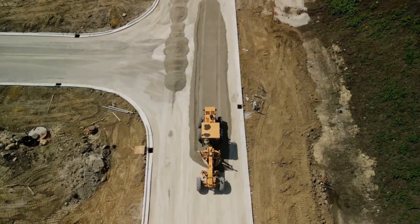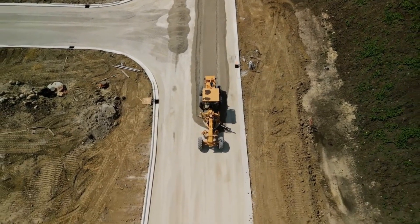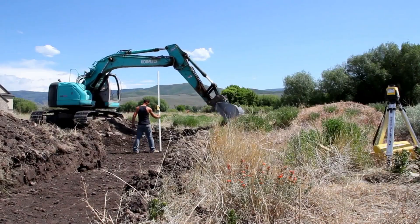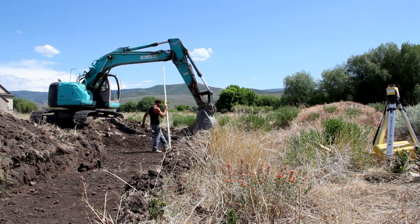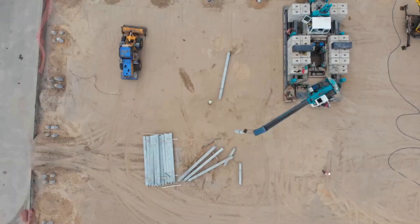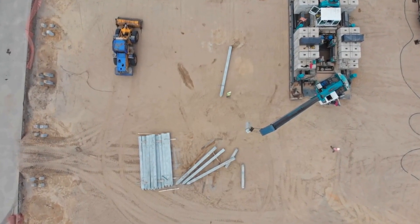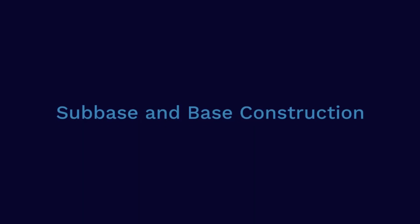Earthwork: The next step is earthwork, where the roadbed is excavated and graded to create a stable foundation. Excavators and bulldozers are used to remove soil, rocks, and other materials. The remaining soil is then compacted to ensure stability and prevent future settling.